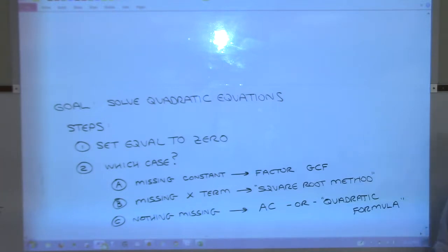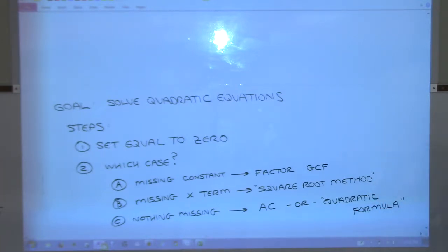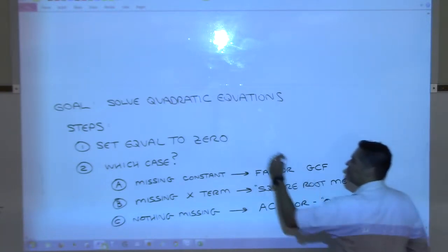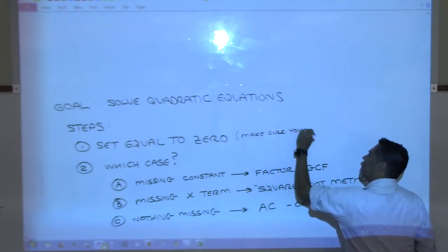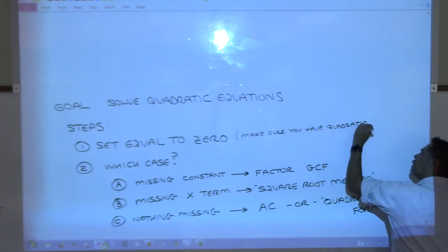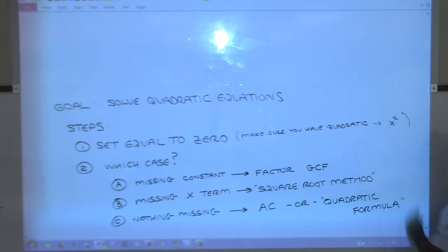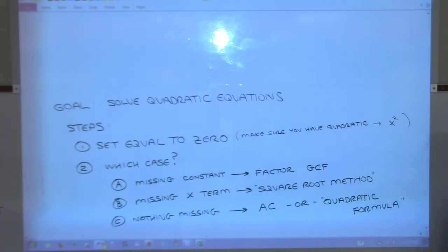When it comes to solving quadratic equations, which is our main goal for the rest of today, here's a set of steps. First, take your equation and get everything to one side so it's equal to zero. Make sure you have a quadratic - you need to have an x squared in there somewhere. Once everything is on one side, there are going to be one of three different ways to solve it.